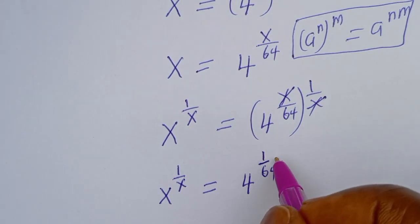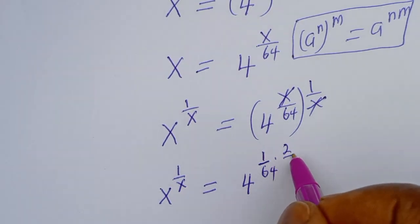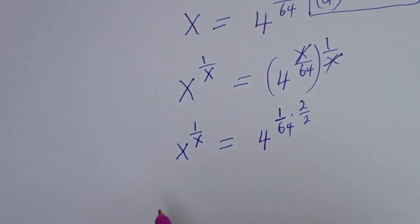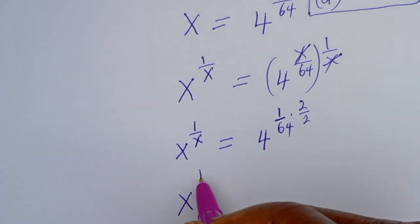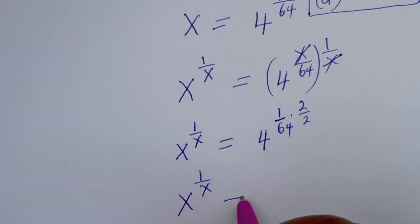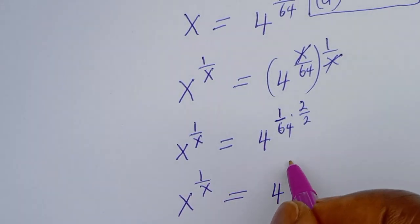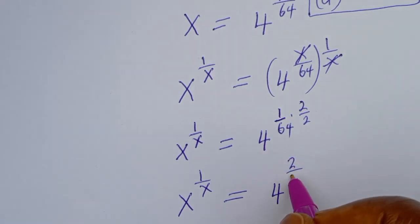Now on the right hand side, let's multiply this exponent by 2 over 2. So this is s to the power of 1 over s is equal to 4 to the power of 2 over 128.